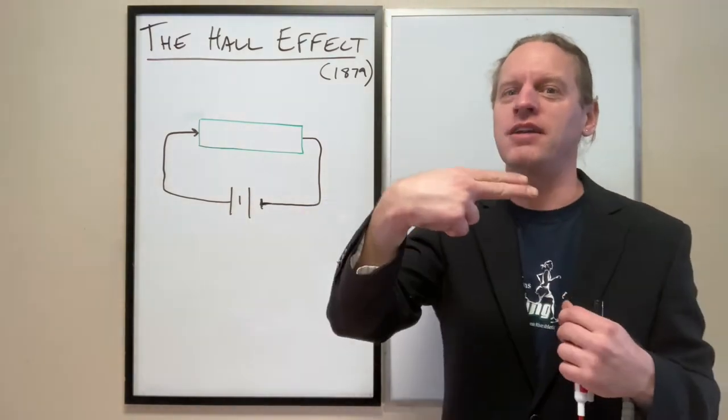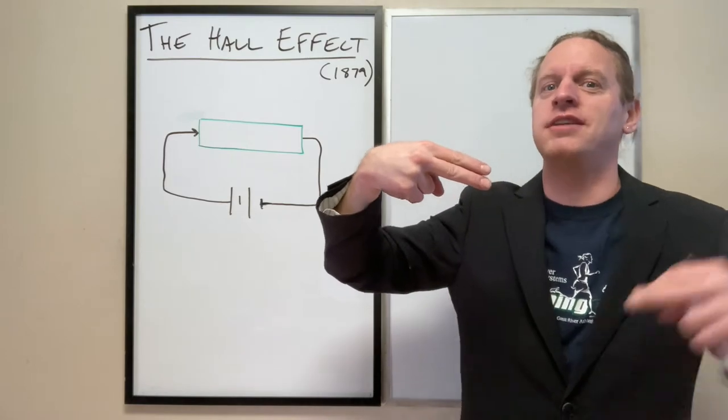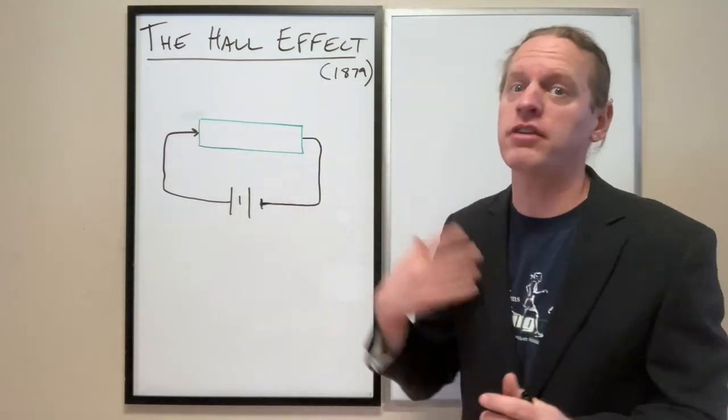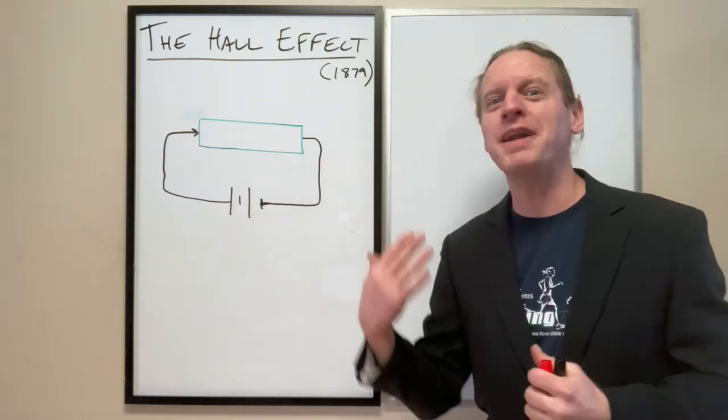So really, if you think about current, what we call conventional current is the opposite direction of the electron flow. And it was Hall that actually discovered that.